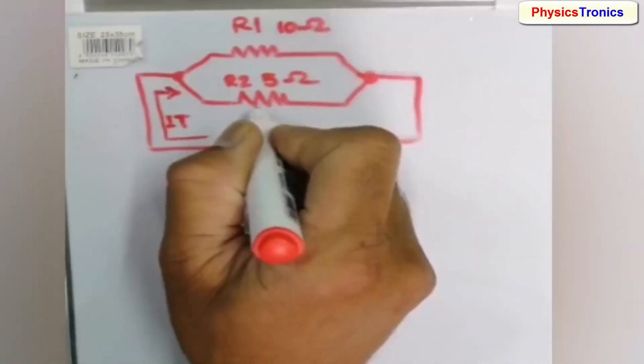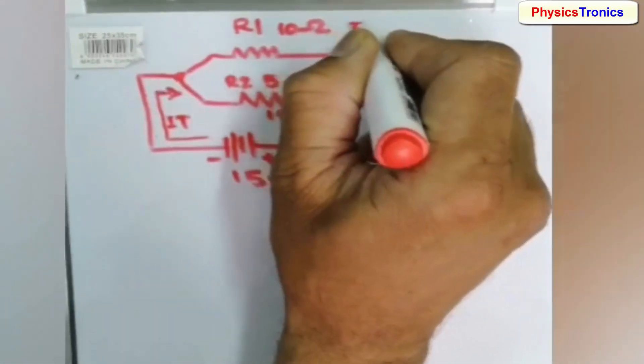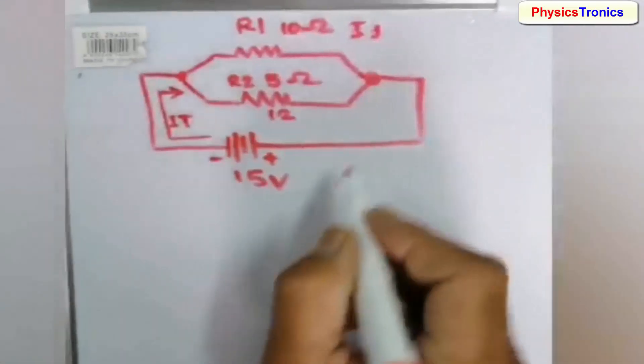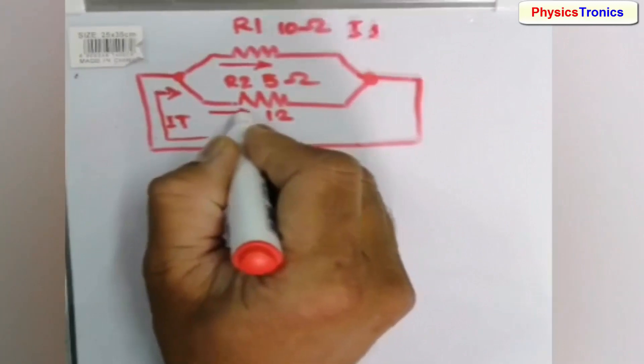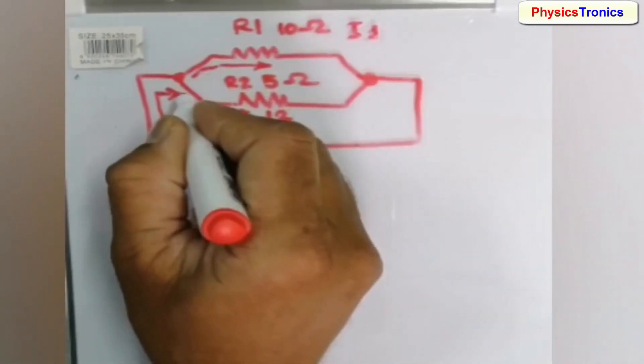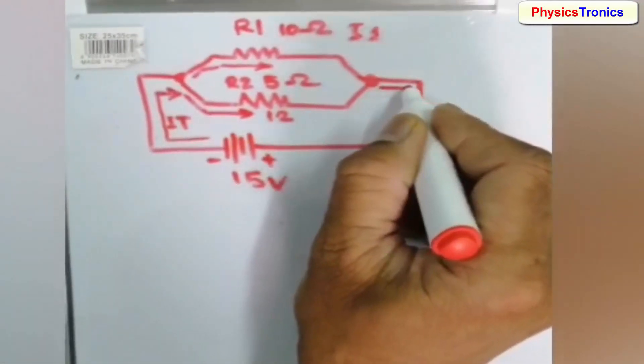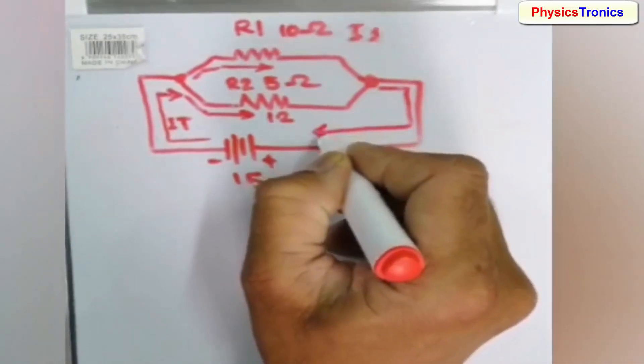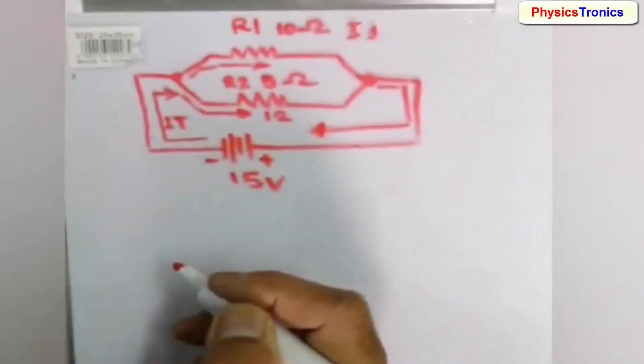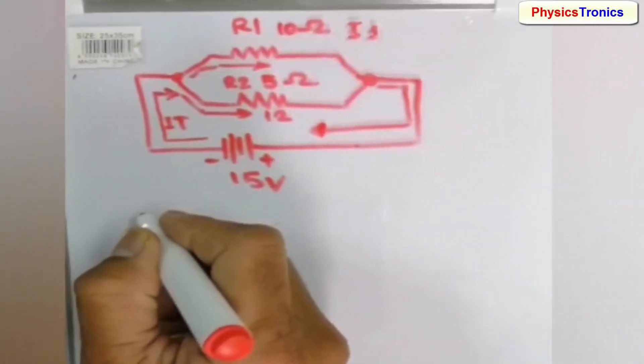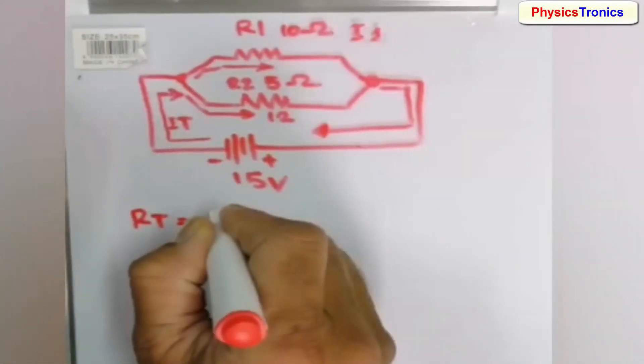The battery will give total current IT. There will be two paths through R1 and R2. Current flowing through R1 we will name I1, and through R2 we will name I2. It takes two paths from the left node, then completes the path back to the battery. From the battery there is one path, and to the battery there is one path, but in between there are two paths. Now we will calculate RT.